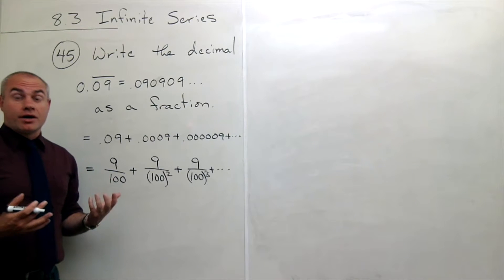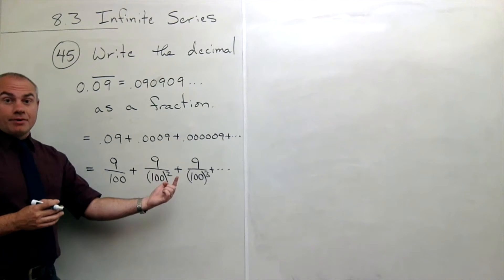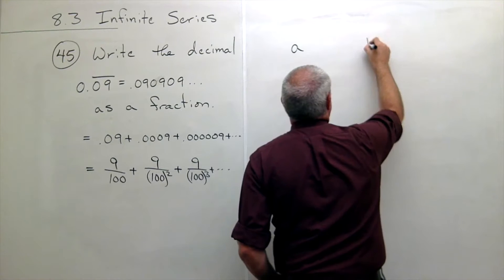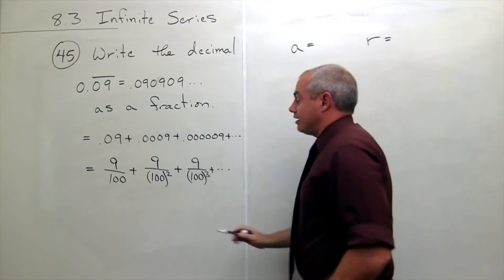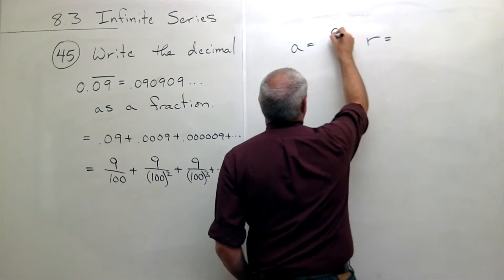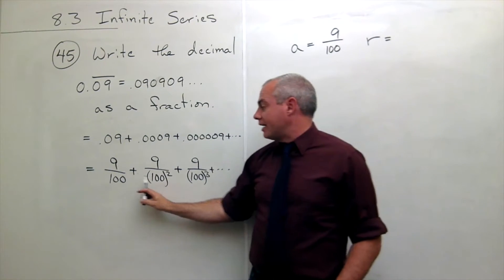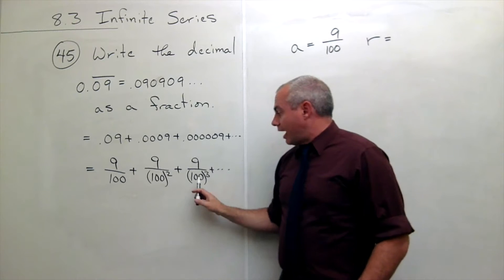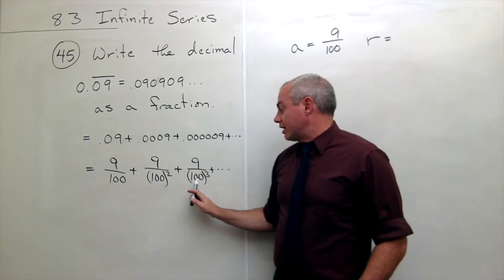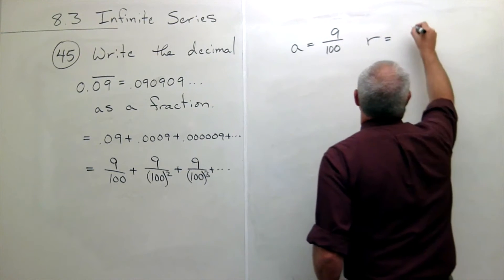So as long as the absolute value of r is less than one, we can sum this series. What is a in this case, and what is r? A is just the first term of the series: 9 over 100. And r is what I multiply every term by to get the next term. To go from one term to the next, I multiply by 1 over 100. So my r is 1 over 100.